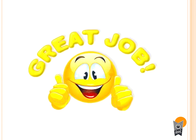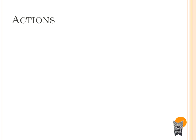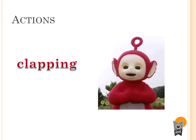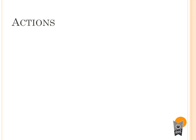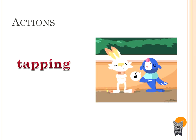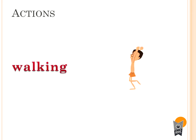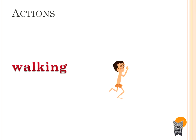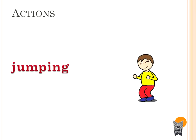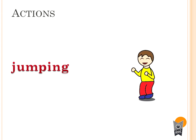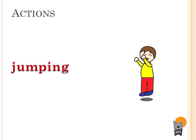Great job! Very good! Now in this happy song, we have seen there are a few actions. Let's revise which actions are there. Clapping — can you all clap? Very good. Clapping is one action. The other is tapping — you also tap your feet. Which is the other action? Yes, walking. Walking is the other action; you can walk in your place. Next, what is this action? Yes, jumping. Jumping is also an action.